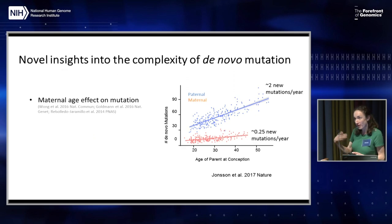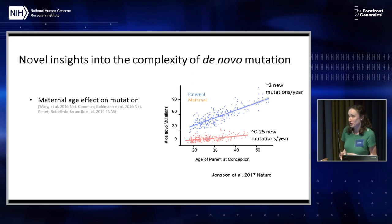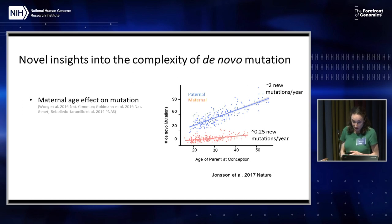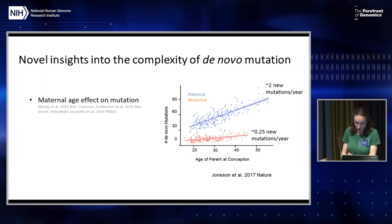Beyond validating these known mutational properties, whole genome sequencing in human pedigrees has led to the discovery of some novel biology about mutation. First, some recent work has actually identified a significant maternal age effect on mutation as well, although the effect is less dramatic than what we see in males.